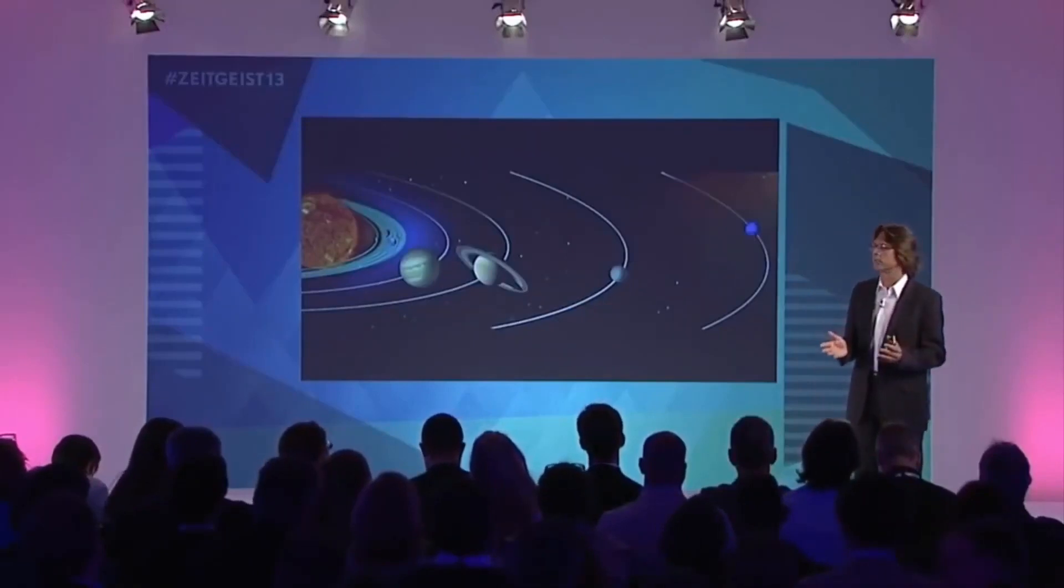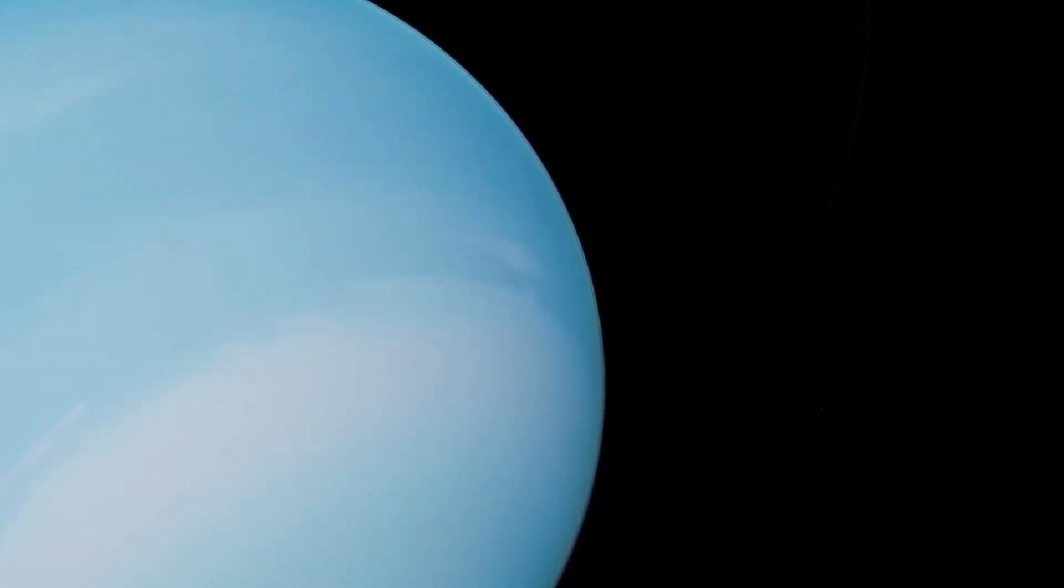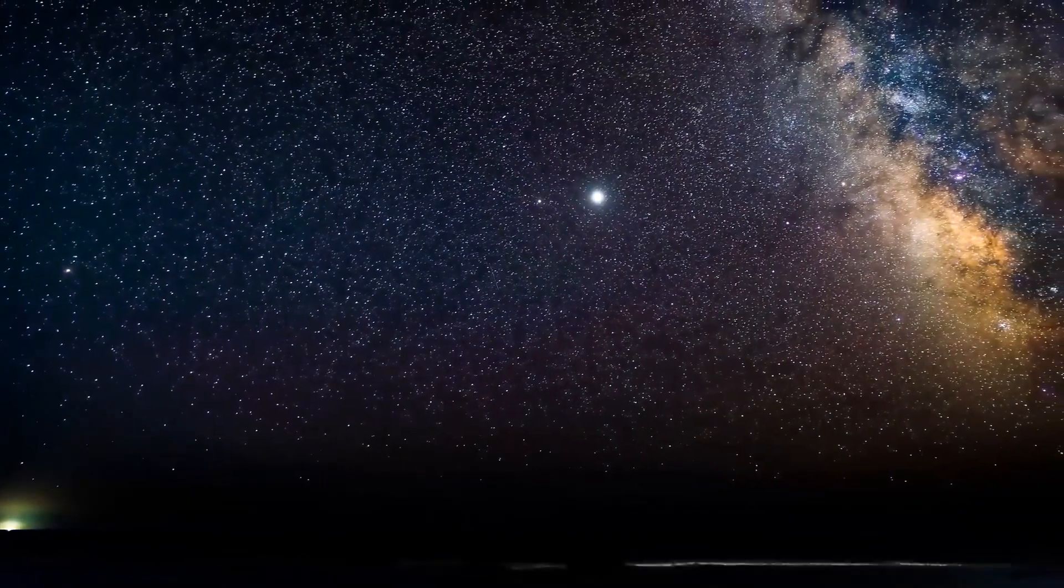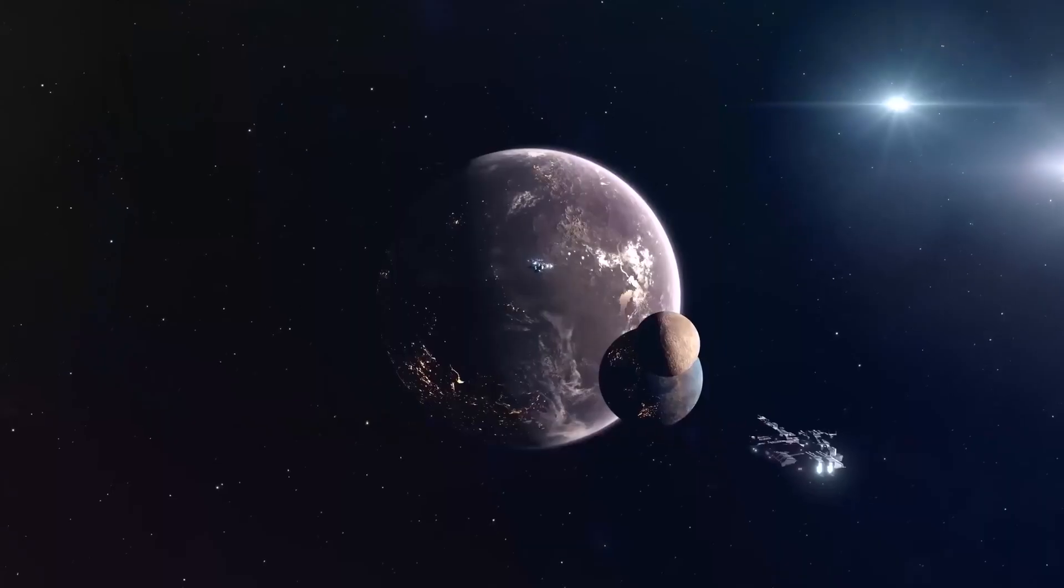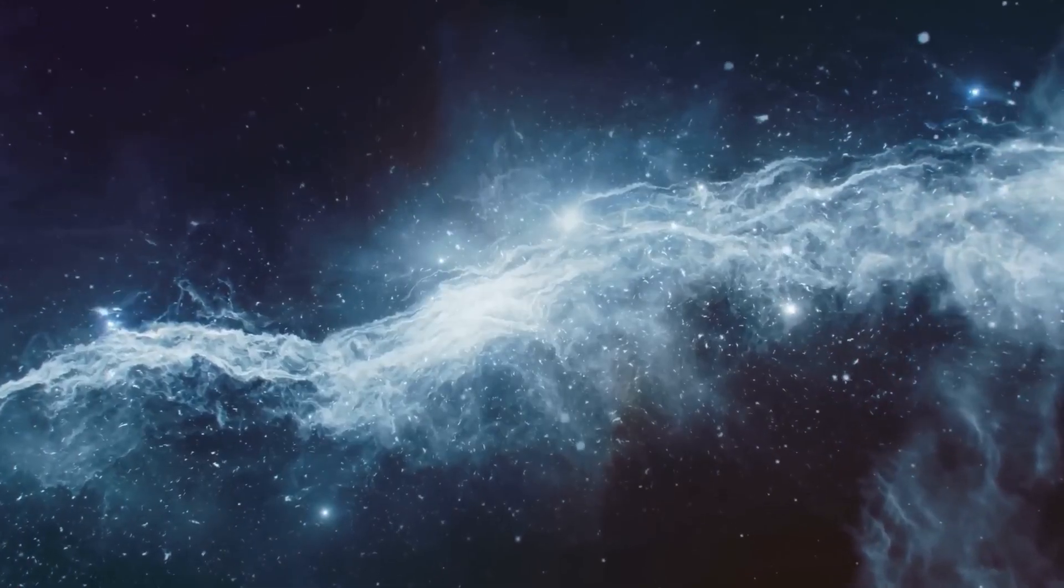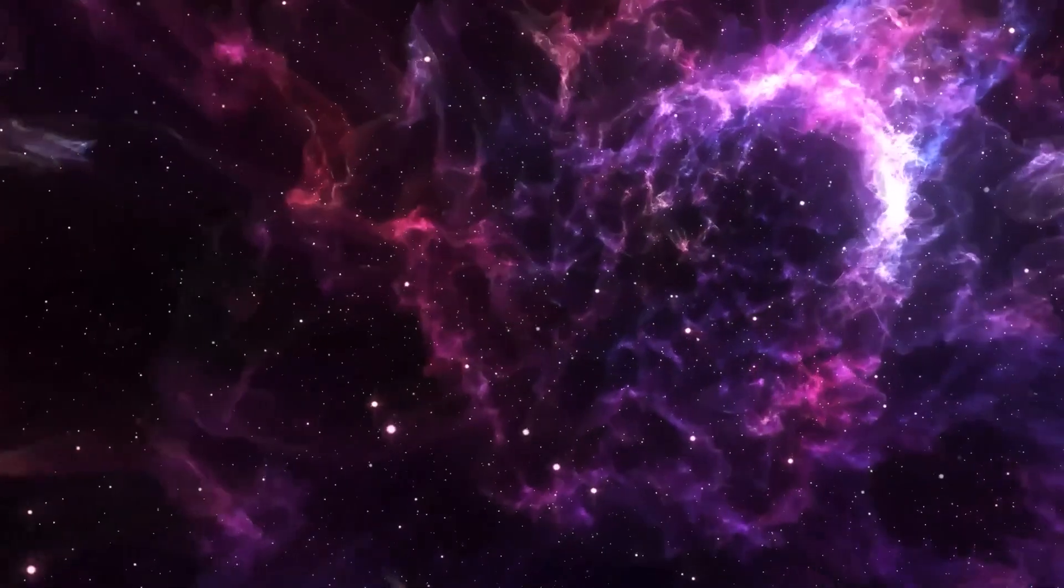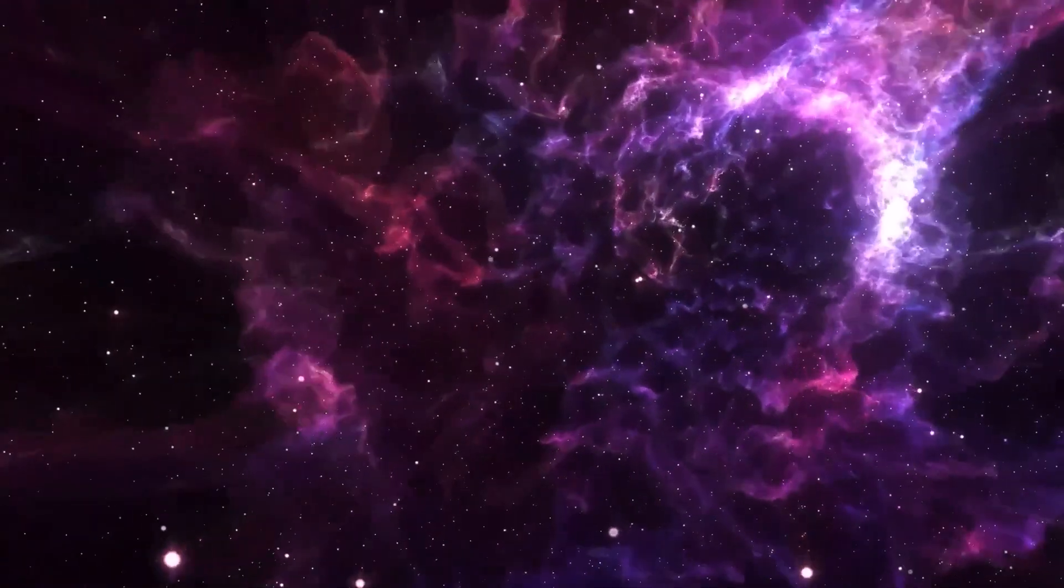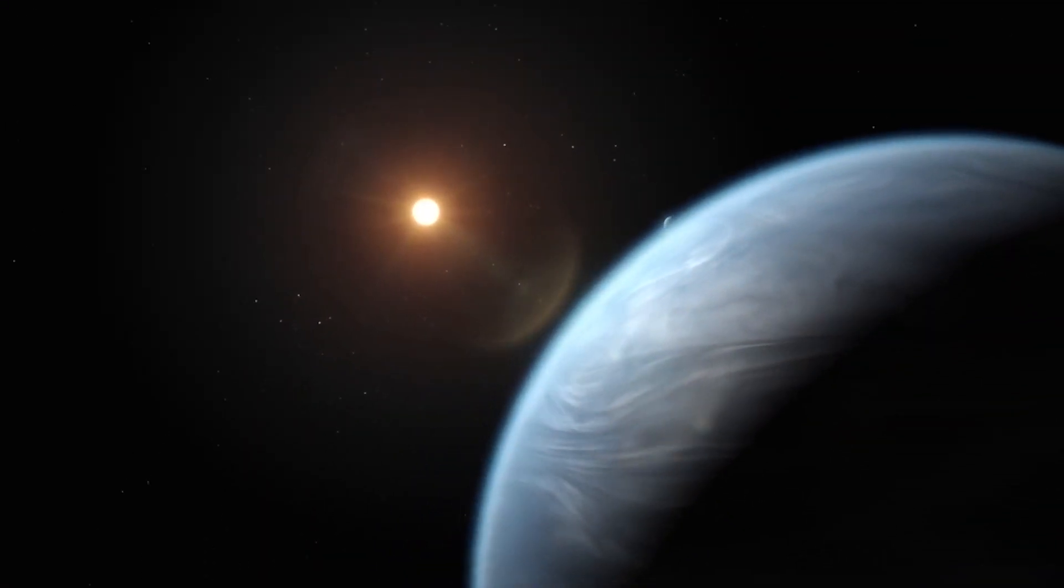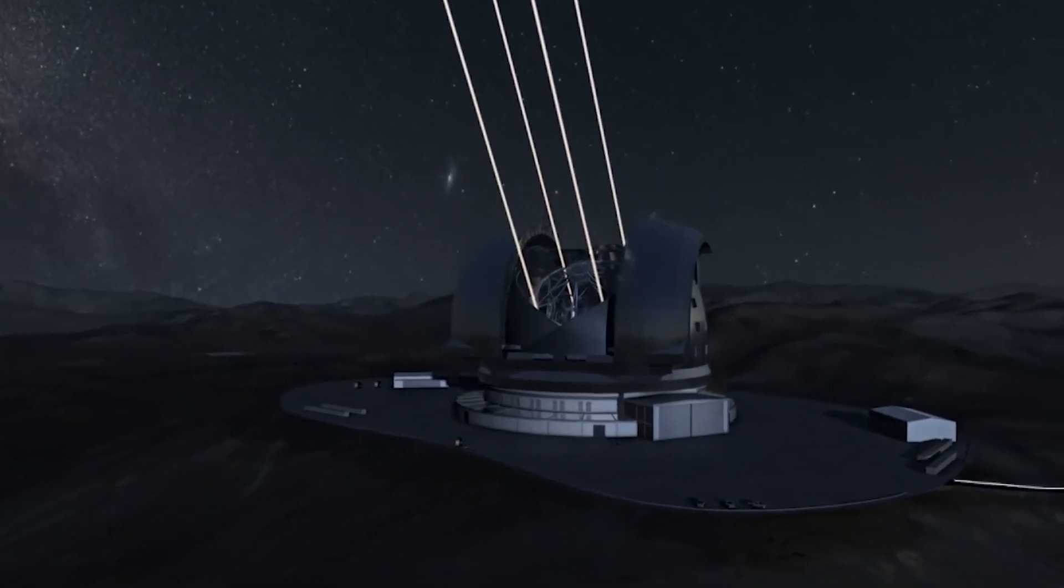Kepler Telescope used the transit method to detect extrasolar planets. Pointing itself at specific regions of the sky, Kepler would measure the apparent brightness of stars, looking for intermittent dips in the amount of light making its way to the aperture. A decrease in the apparent light suggested the transit of an object, but that wasn't enough to confirm the existence of a planet. Any number of phenomena can cause a temporary reduction in the brightness of a star. That's why Kepler required at least three dimming events at repeated intervals in order to confirm the existence of a planet.